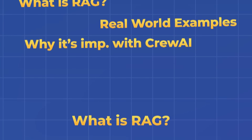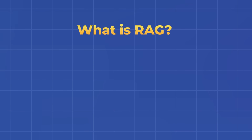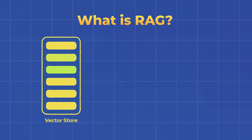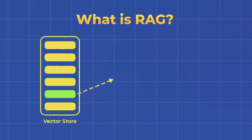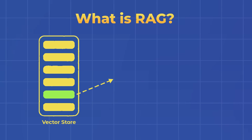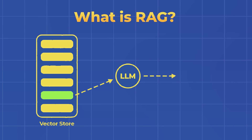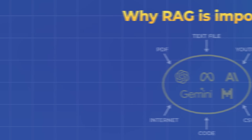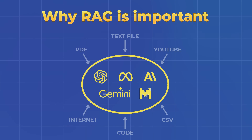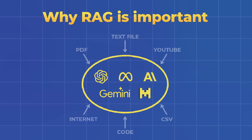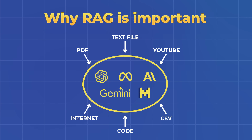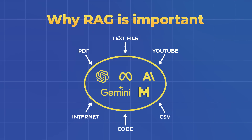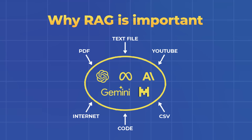So what is RAG? It's nothing more than a technique that allows us to retrieve relevant information from a special database called a vector store. We're going to pass that information we retrieve plus the initial request over to one of our LLMs like OpenAI or Anthropic or one of the other models to generate a response. RAG is such an important technique because LLMs have a limited knowledge base.